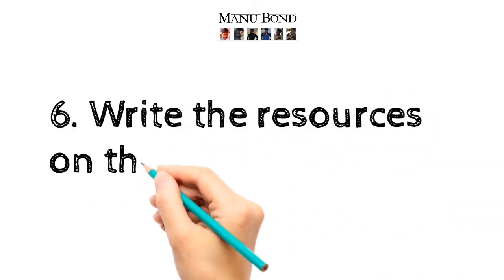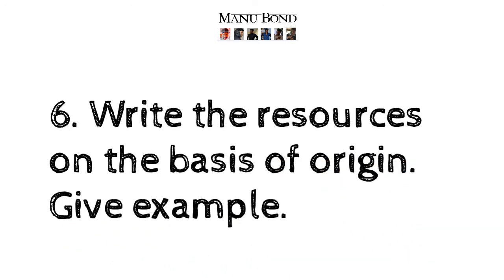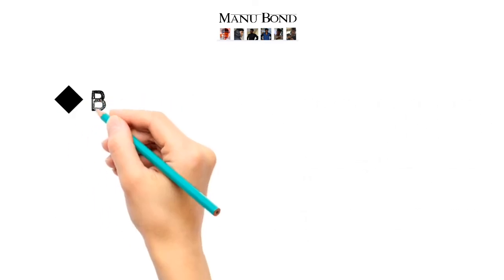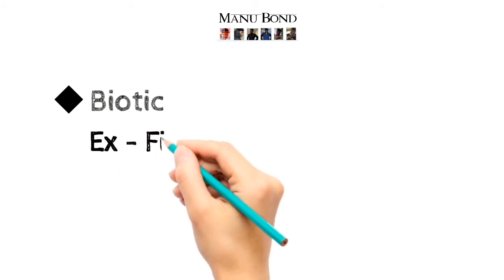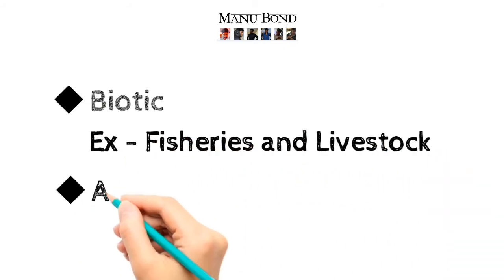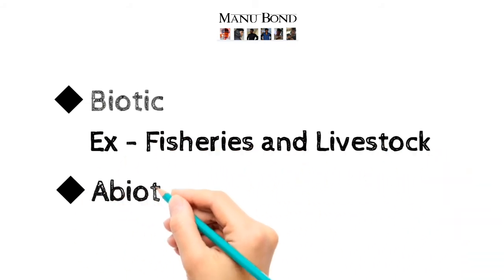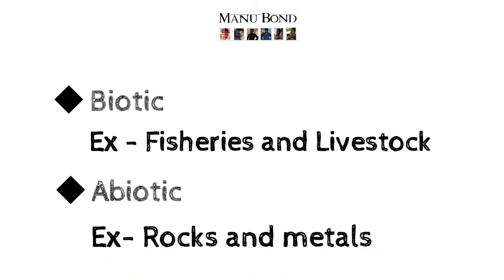Question number 6: Write the resources on the basis of origin and give examples. Answer: Biotic — example, fisheries and livestock. Abiotic — example, rocks and metals.